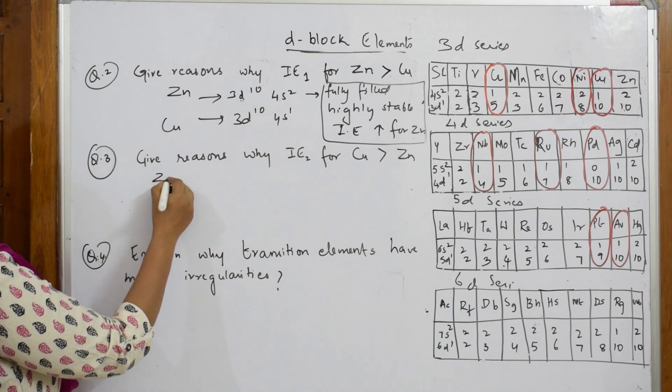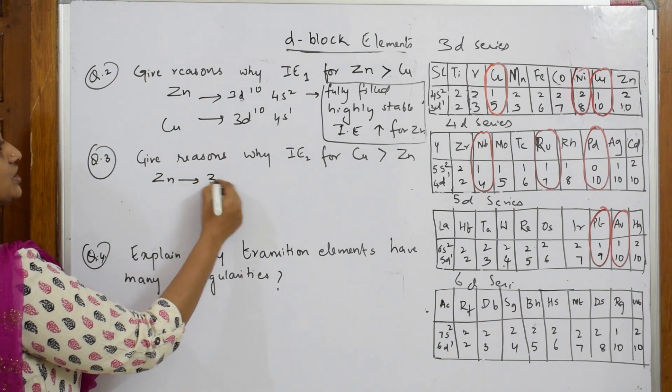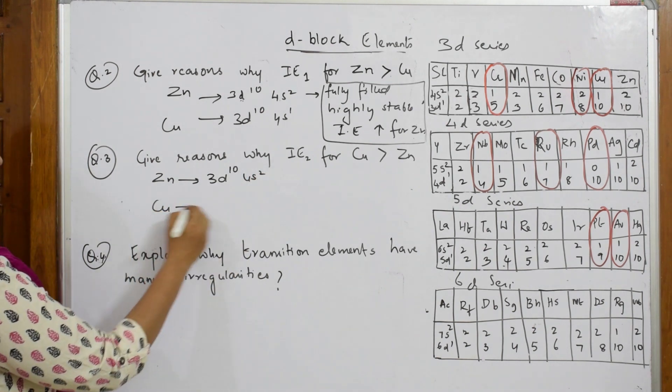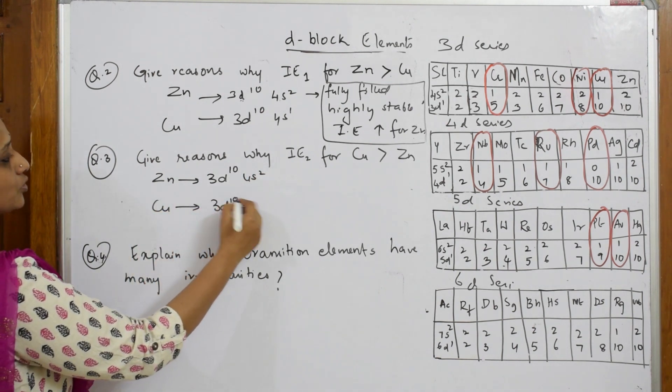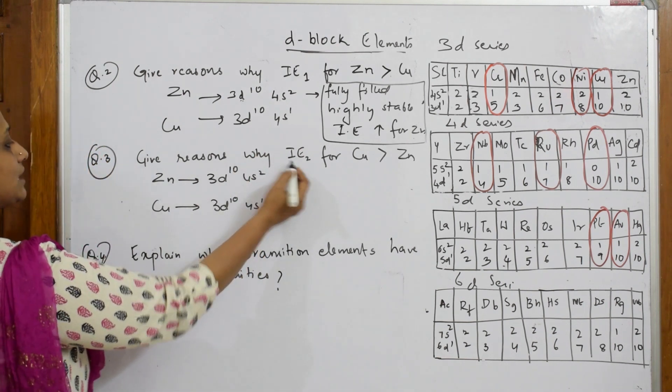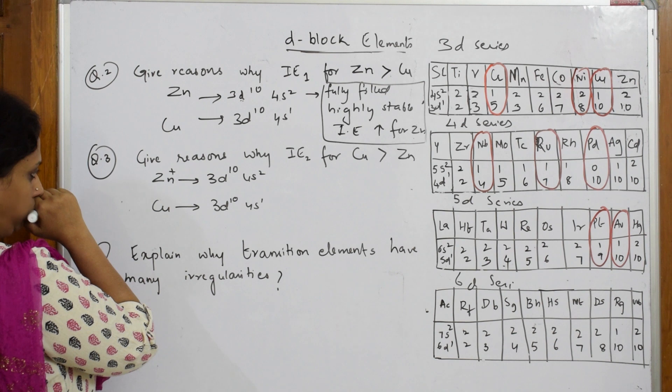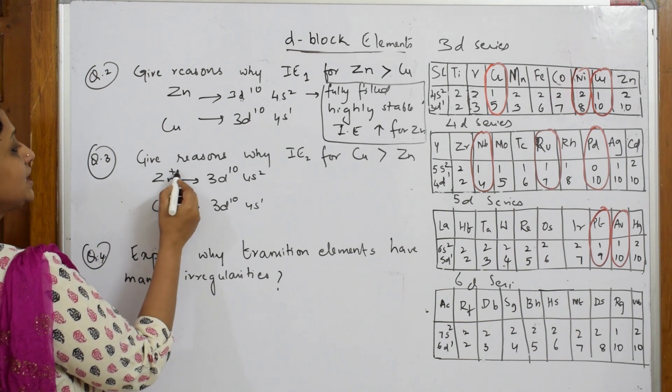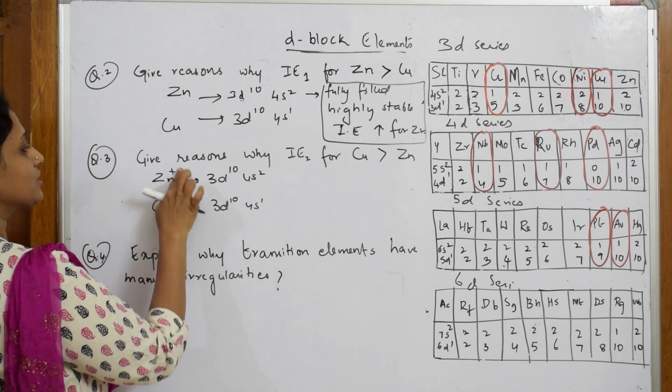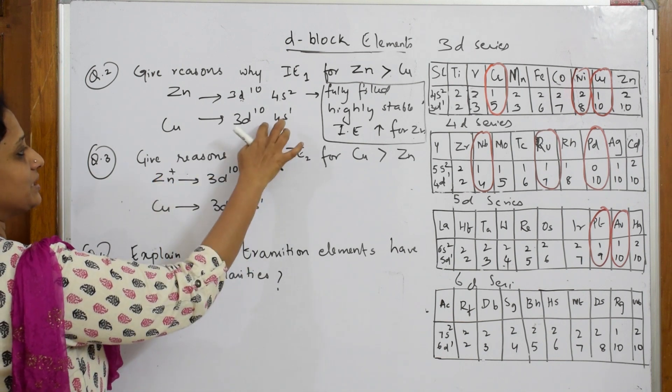Now let us take out one electron from copper and one electron from zinc. Again I'll write the configuration. Zn configuration is 3d10 4s2. Copper configuration is 3d10 4s1. Now this is second ionization enthalpy.